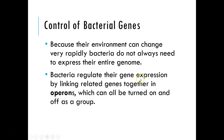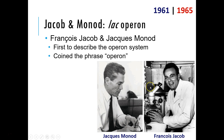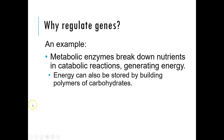Bacteria do this by linking genes together in something called operons, which can be turned on and off as a group. The operon model was discovered in 1961 by François Jacob and Jacques Monod, and they got a Nobel Prize for this in 1965 — a ludicrously fast Nobel Prize turnaround time. They coined the phrase 'operon,' which comes from the Latin 'opera,' meaning 'works.' Operons are the mechanism through which bacteria regulate their genes.